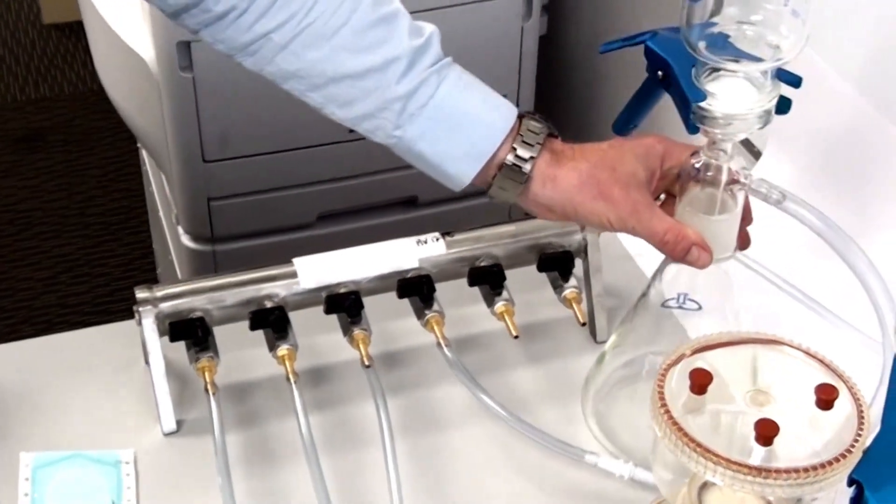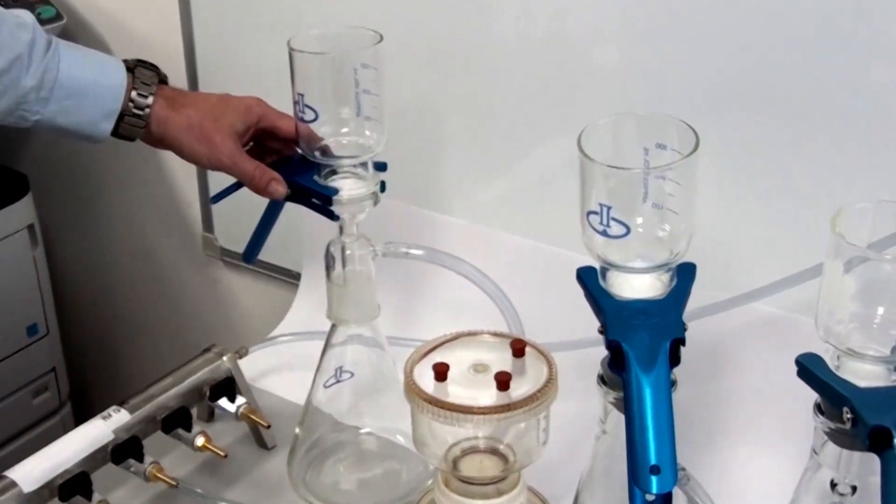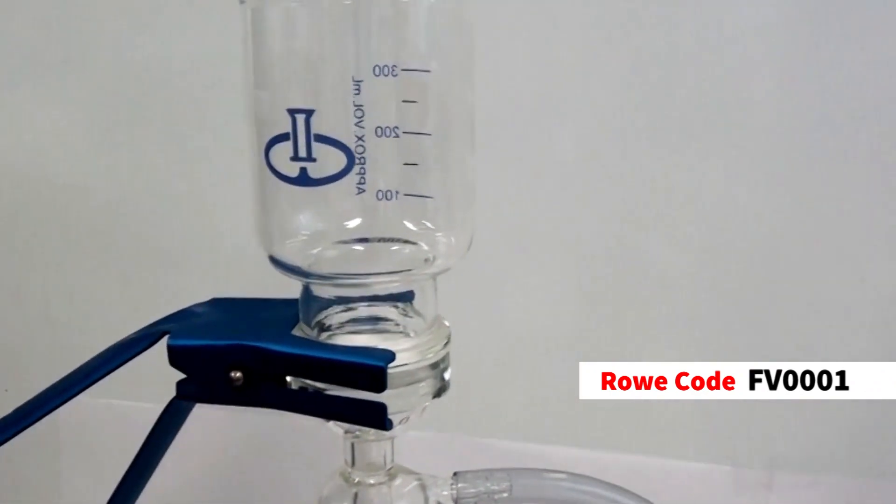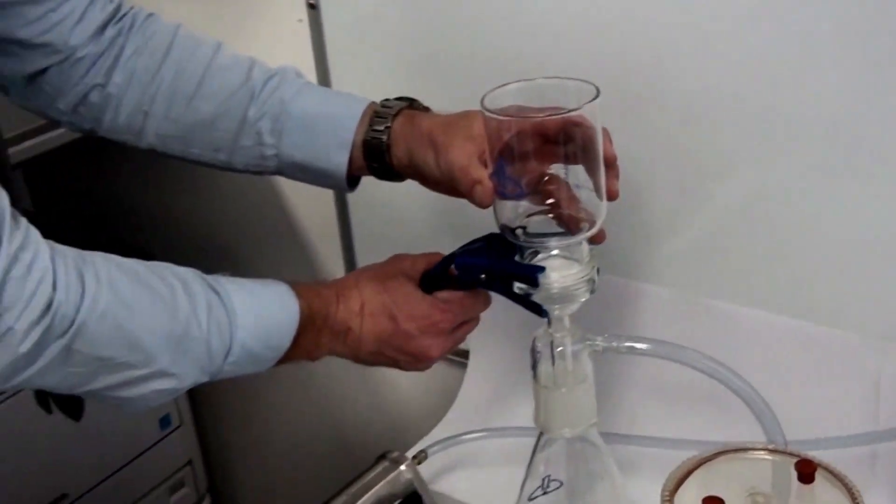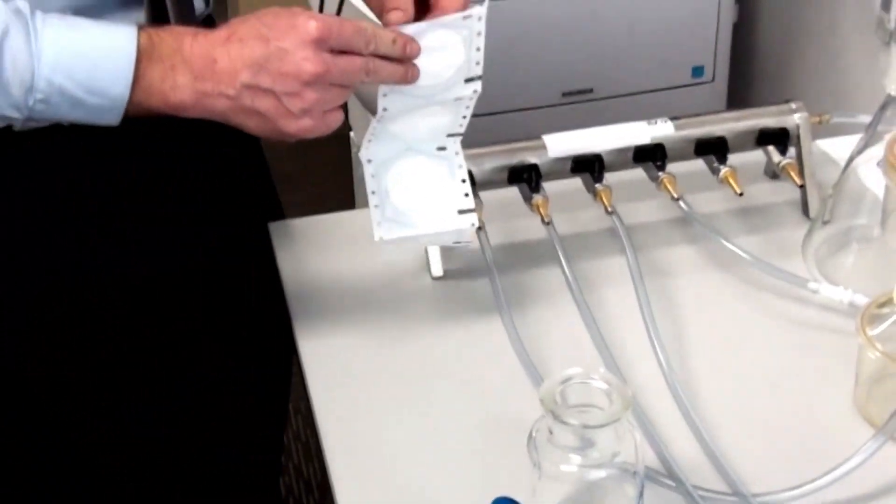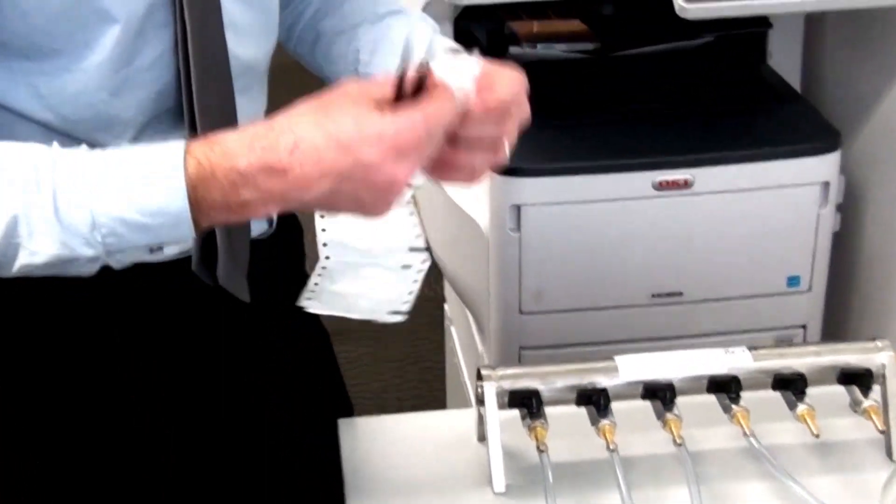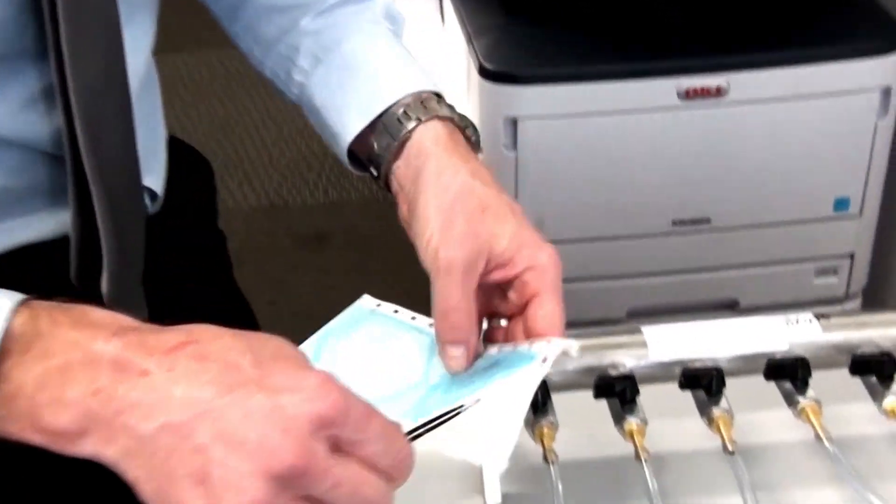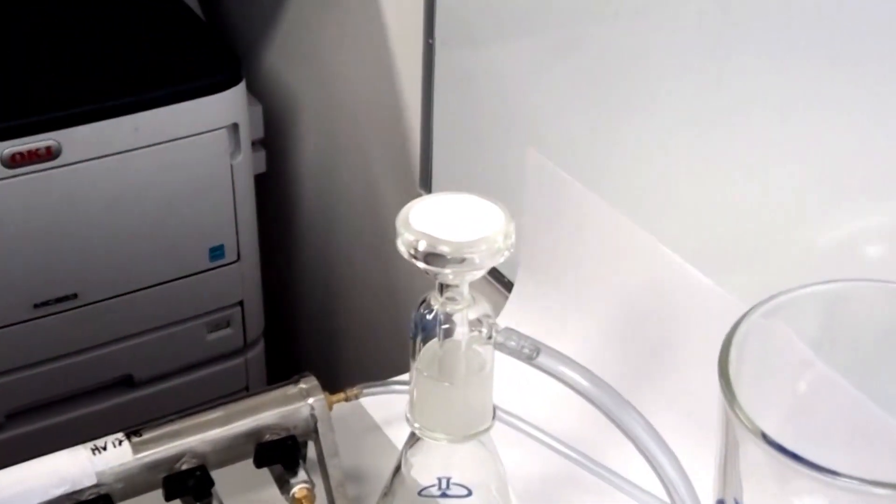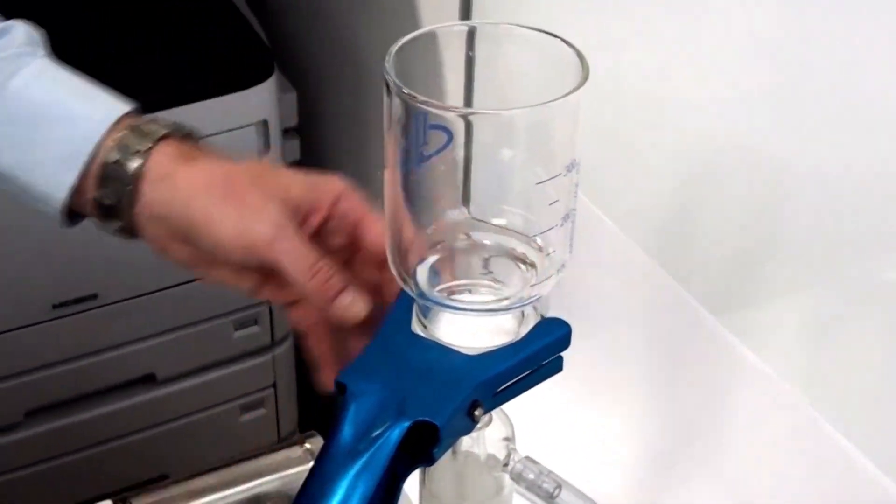Okay, so the first filtration setup we've got here is the Filter Bioscience part number FV0001. And I've got membranes here. This just comes off like so. I'll pop a membrane on here. This is a 47mm membrane. Pop that on there with the forceps. Okay, so that's good to go.